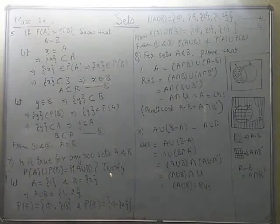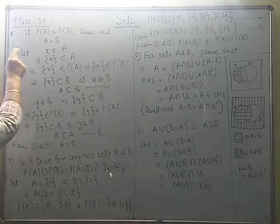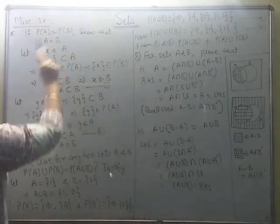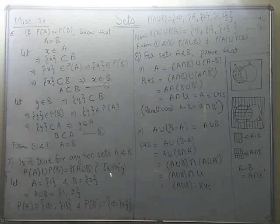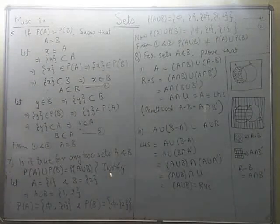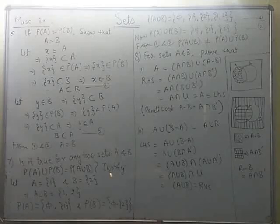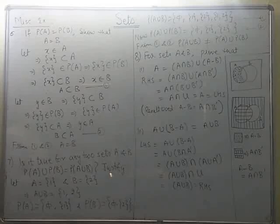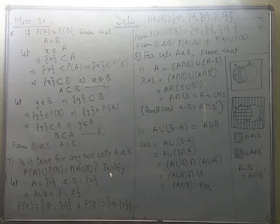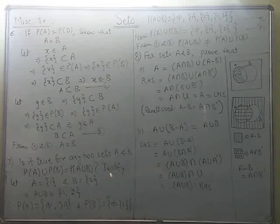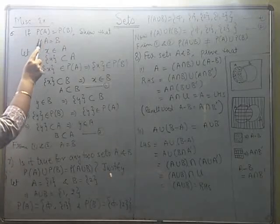A few more examples on sets. Question number 6 states: if the power set of A is equal to the power set of B, then show that A is equal to B. In your assignments, I have checked that you are not writing the power sets correctly. Please recall the definition of power set — it contains all subsets of the given set. They are saying if power set of A and power set of B are equal, show A and B are also equal. I start with the elements of A.